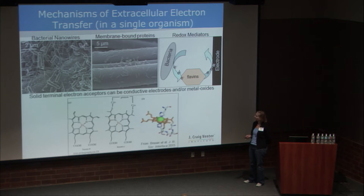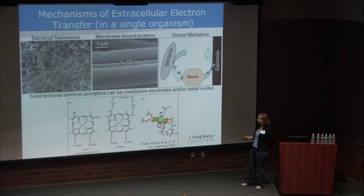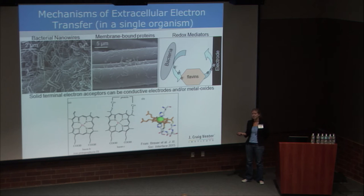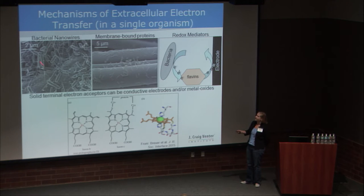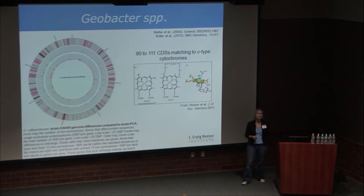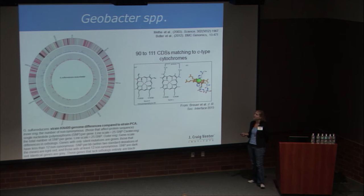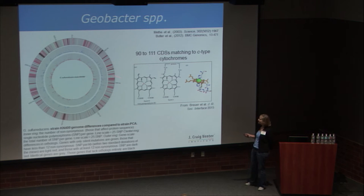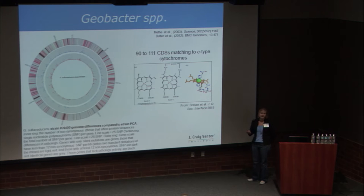It all boils down to c-type cytochromes, at least in Shewanella. Just as an example of what these proteins look like: we are looking for multi-heme c-type cytochromes. Shewanella can encode up to 42 different c-type cytochromes, up to deca-heme quantity in terms of the amount of iron facilitating that electron transfer. Geobacter, another wonderful model organism and a very strict anaerobe, also encodes many different c-type cytochromes — in fact many more than Shewanella; up to 111 have been identified.